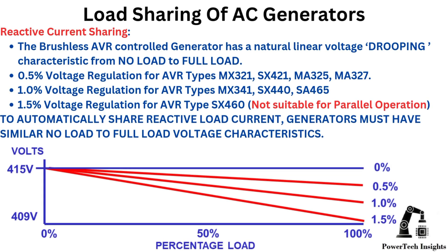Reactive current sharing. The brushless AVR control generator has a natural linear voltage drooping characteristic from no-load to full-load: 0.5% voltage regulation for AVR types MX321, SX421, MA325, MA327; 1% voltage regulation for AVR types MX341, SX440, SA465; 1.5% voltage regulation for AVR type SX460, not suitable for parallel operation.